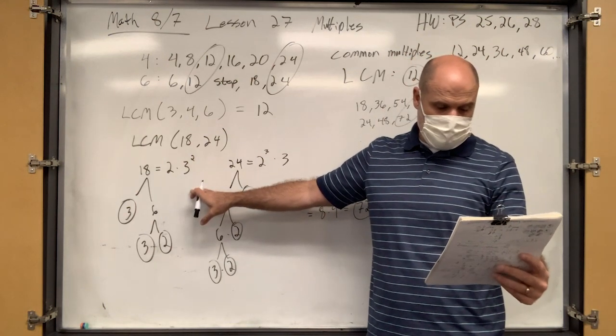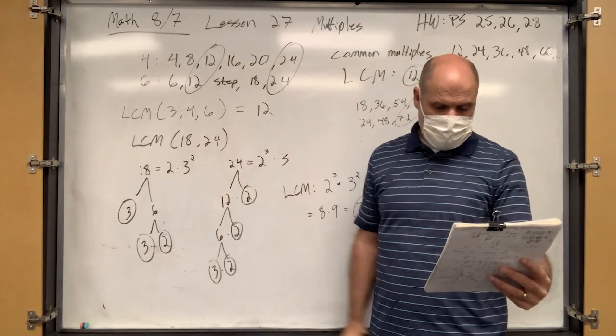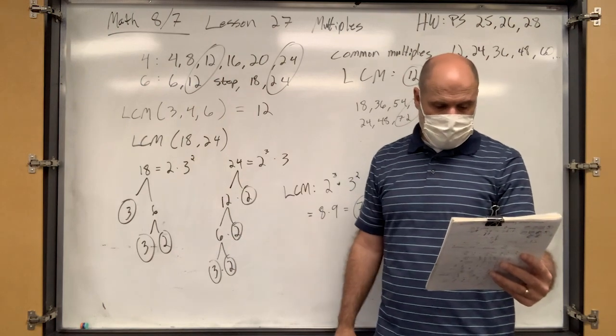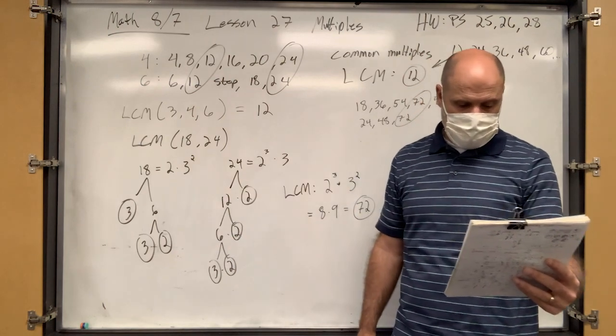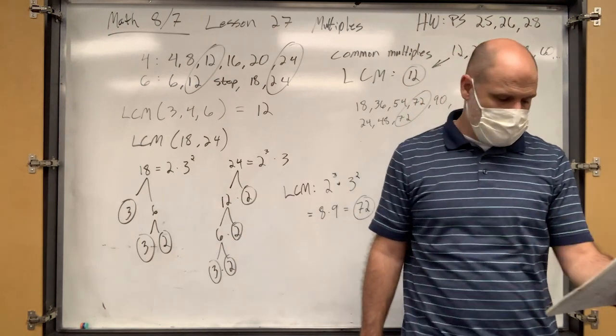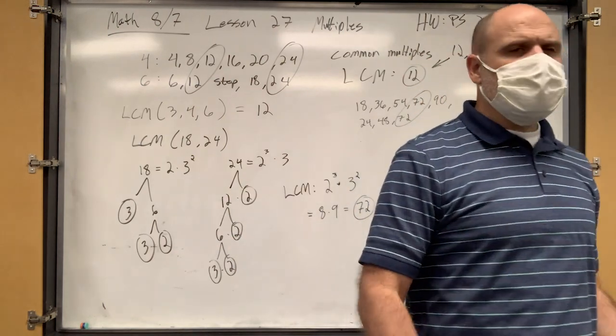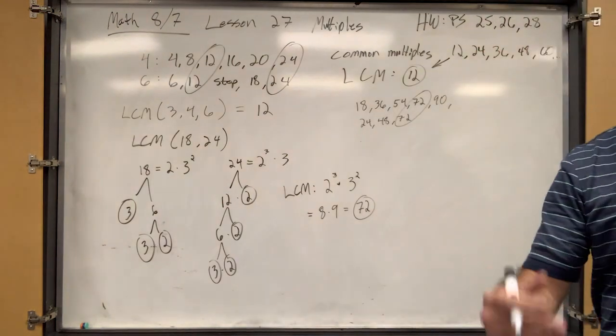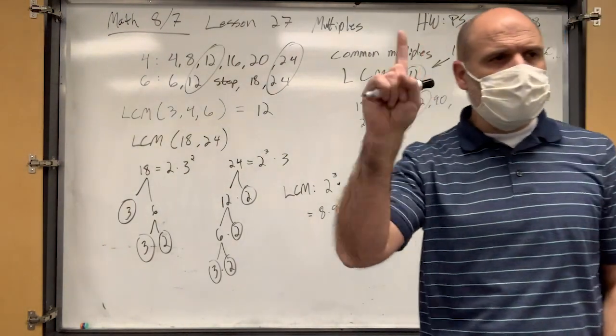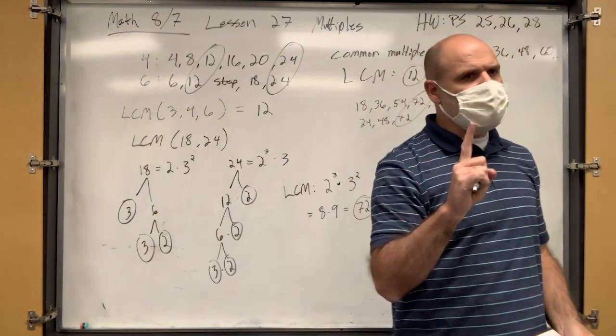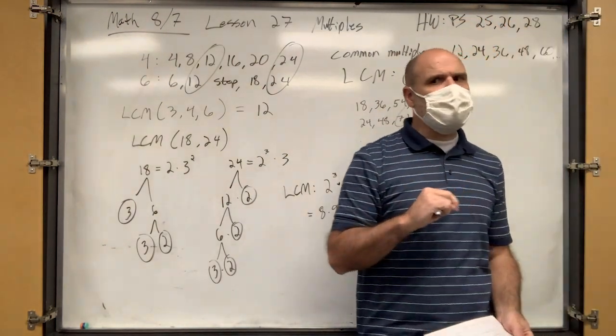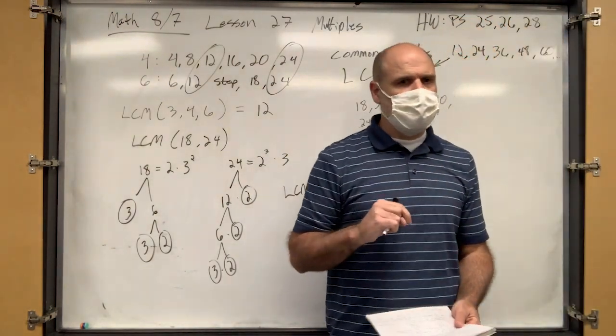Are you guys comfortable with at least one of these methods to find the least common multiple?